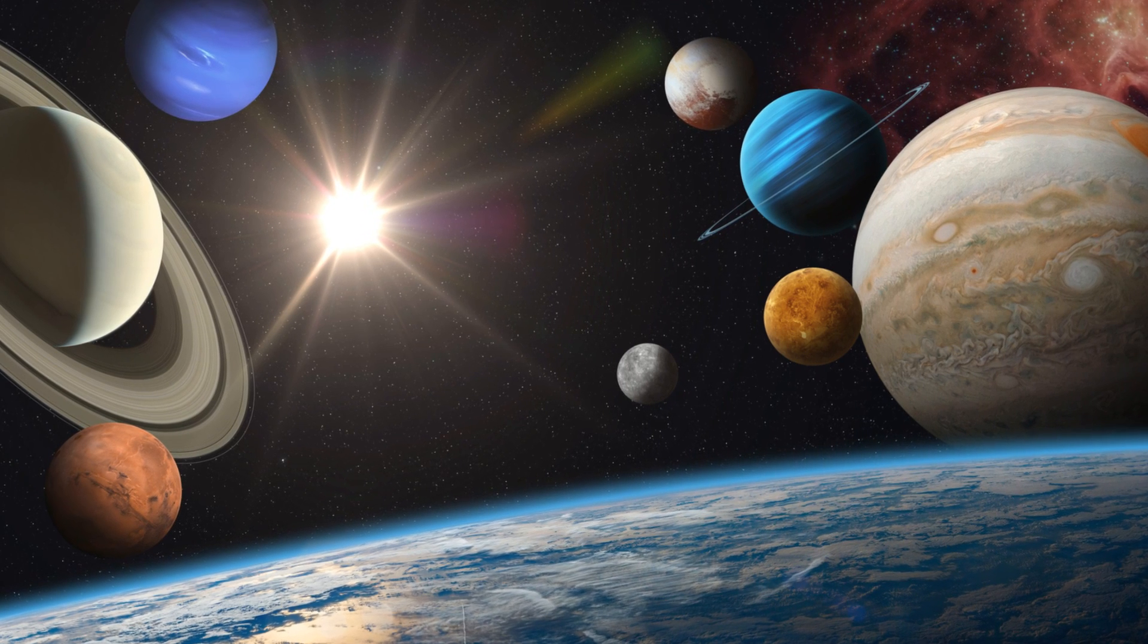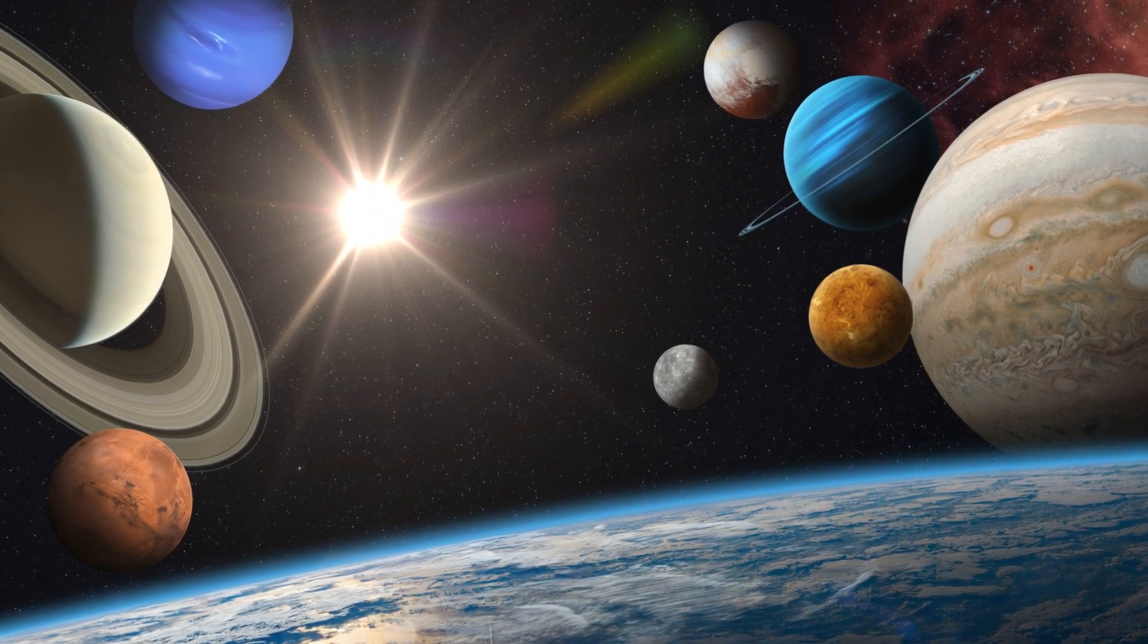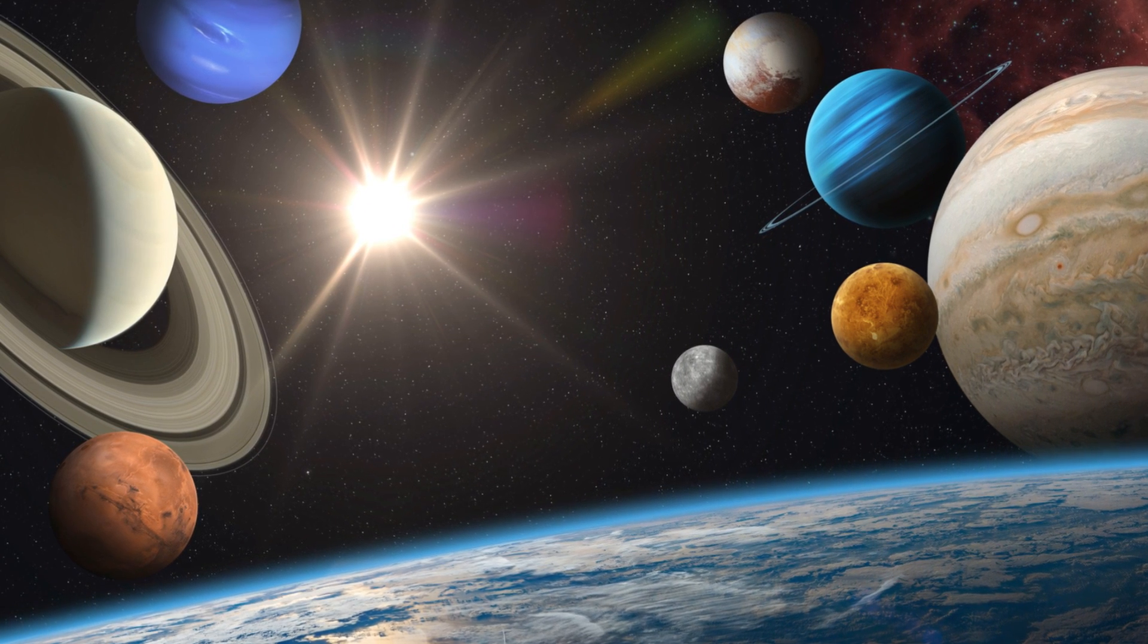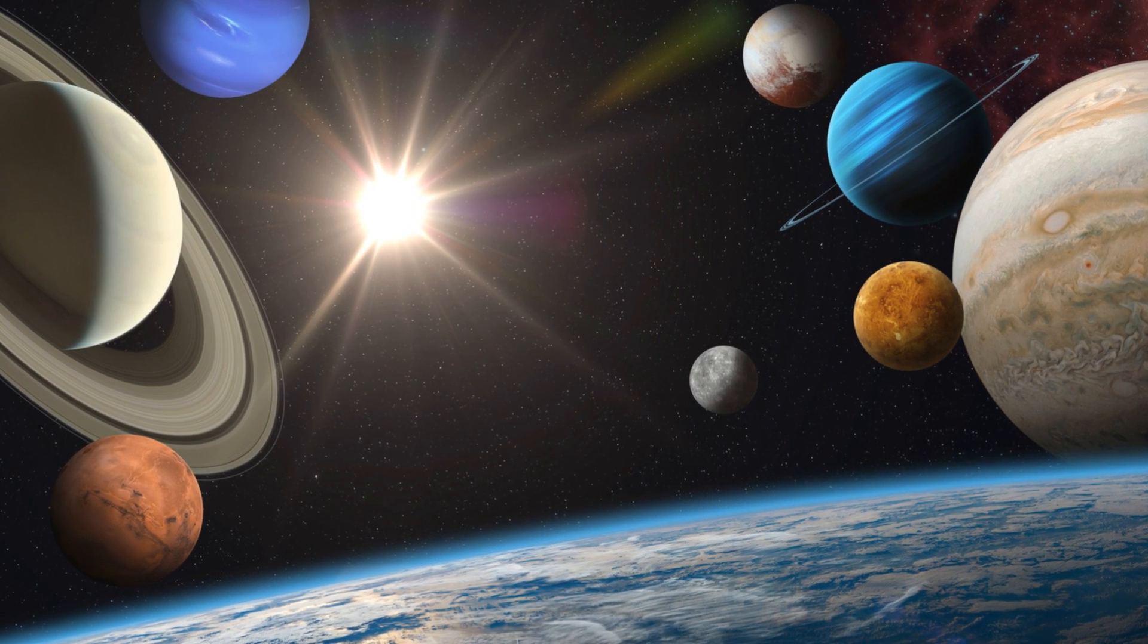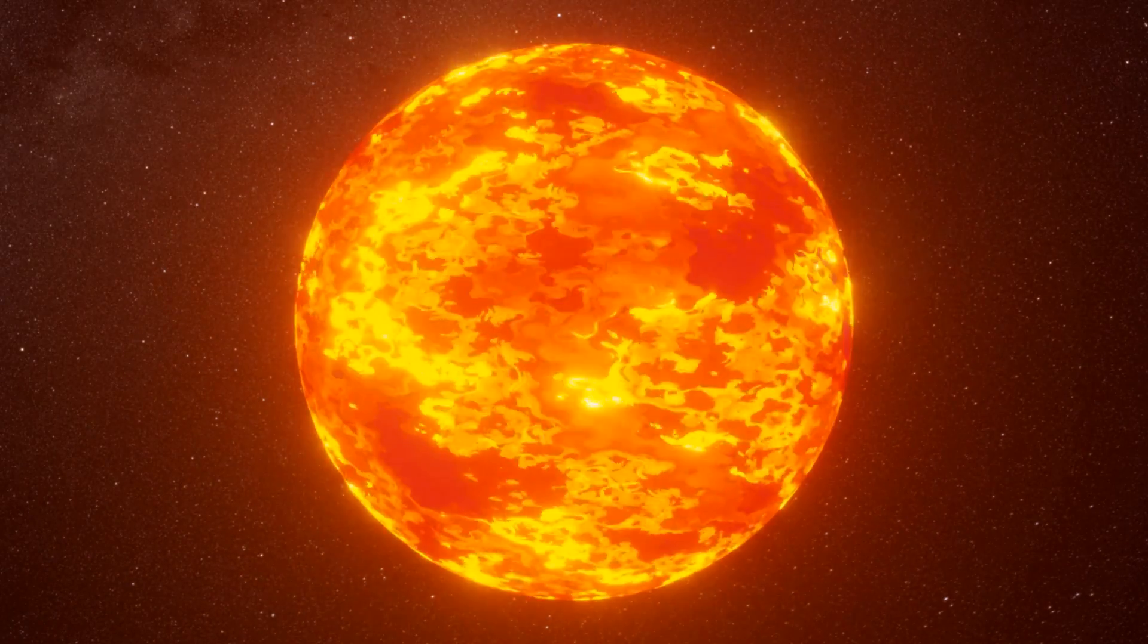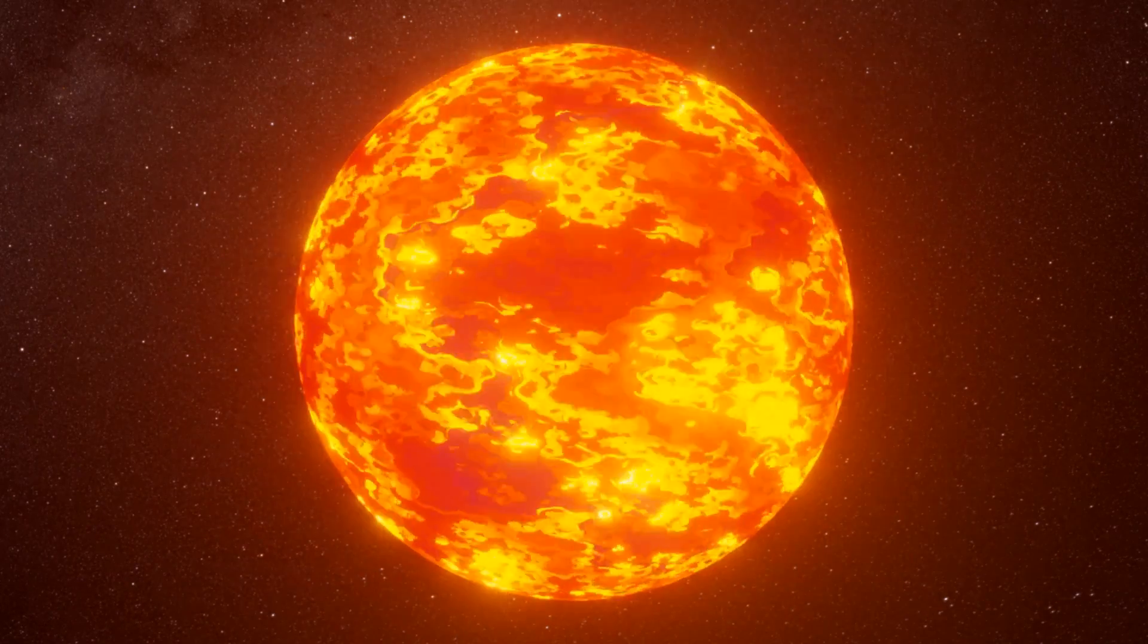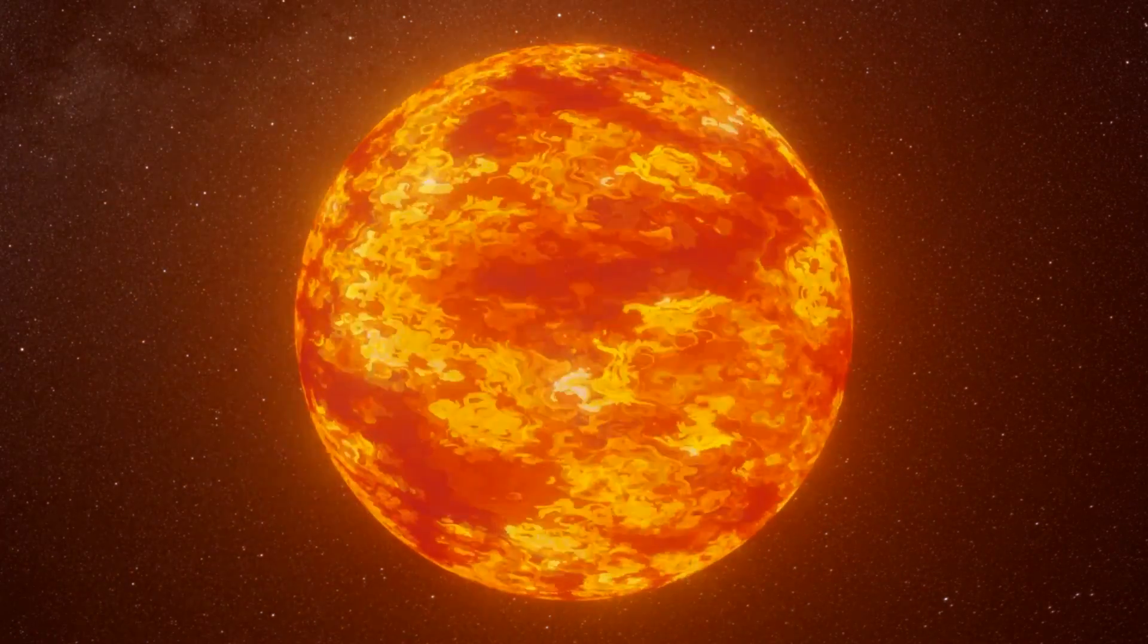During the day, Mercury basks in the full intensity of the Sun's heat. Its surface, barren and rocky, heats up to a scorching 800 degrees Fahrenheit. That's hot enough to melt lead. Imagine stepping onto a world where a single day could incinerate you. That's the reality on Mercury's sun-kissed side.